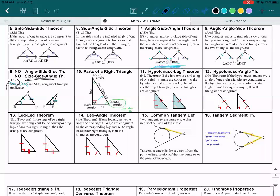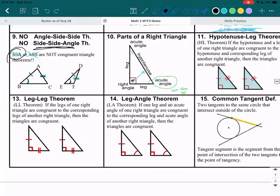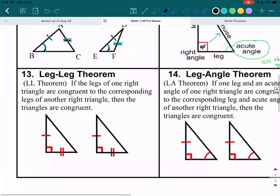Box 13. Box 13 says leg leg theorem. So if your two legs are the same, then your triangles are congruent. So like let's say this one is four. So that's congruent. And this is congruent as well. Then these triangles have to be congruent.